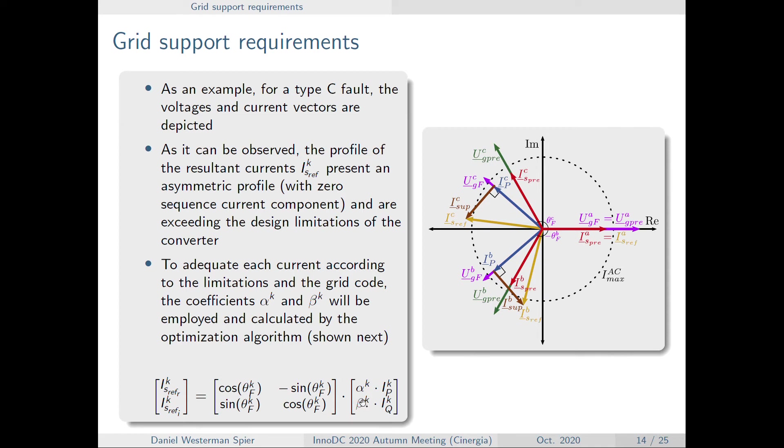Therefore, the optimization will try to maximize alpha and beta in order to not only eliminate the zero sequence in the AC side, maximizing the current, however not exceeding the maximum, and the other constraints that will be imposed with the optimization problem to ensure that the other quantities are not exceeding the converter limitations.